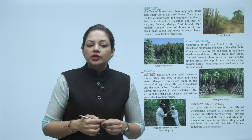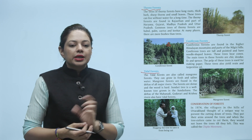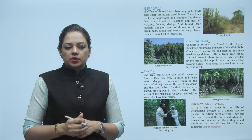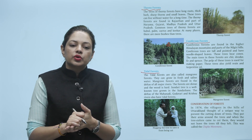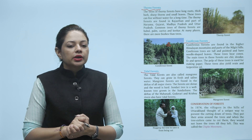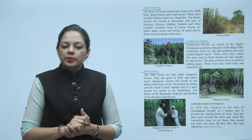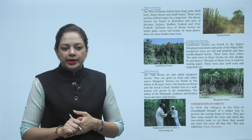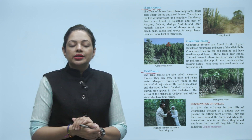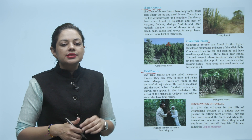Tidal forests are also called mangrove forests. They can grow in fresh and saline water. Mangrove forests are found in the deltas of all major rivers. The forests are dense and the wood is hard. Sundari tree is a well-known tree grown in the Sundarbans, and the deltas of the Mahanadi, Godavari and Krishna rivers also have tidal forests.